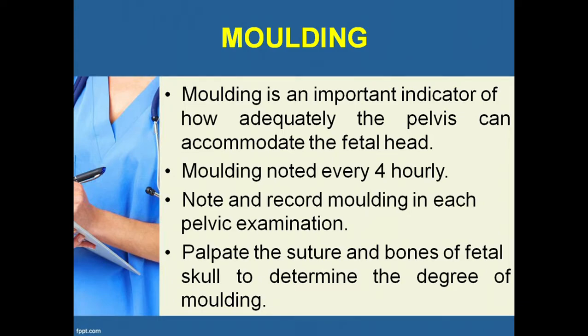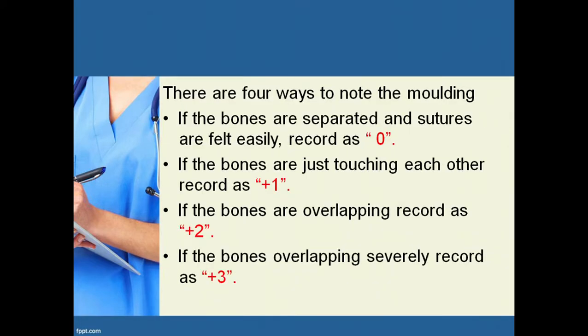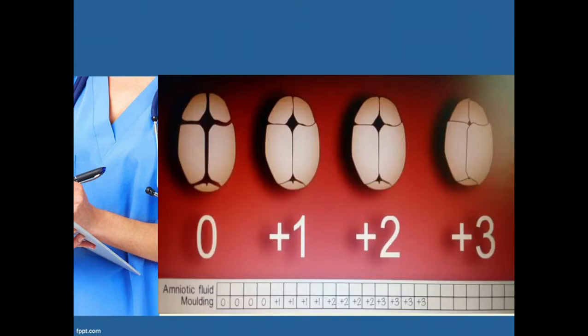Molding is an important indicator of how adequately the pelvis can accommodate the fetal head. Molding is noted every four hours. Palpate the sutures and bones of the fetal skull to determine the degree of molding. There are four ways to note molding: if bones are separated and easily felt, record as 0; bones just touching each other, record as +1; bones overlapping, record as +2; bones overlapping severely, record as +3.